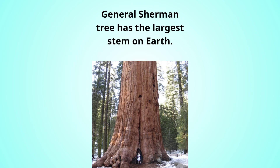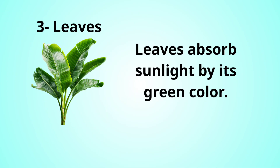Look at this tree. The General Sherman tree has the largest stem on the earth. Look at the size of this man comparing to the tree's stem — he looks so tiny! Because the General Sherman tree has the largest stem on the earth. The third part of the plant is leaves.